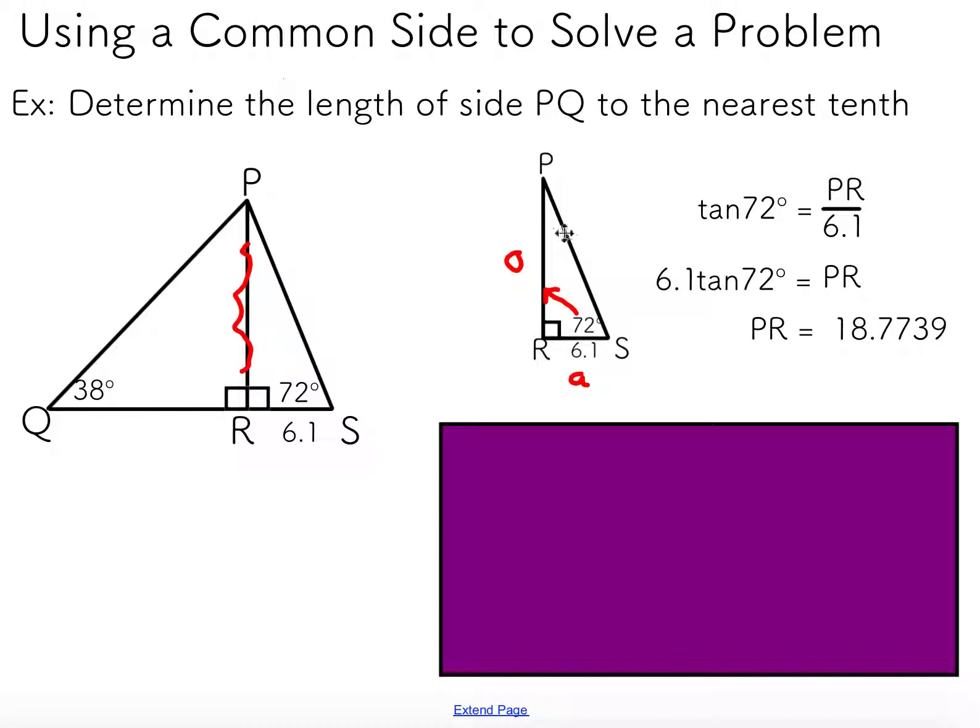I now have that shared side, and I know that that is 18.7739. I'm just going to put that on my triangle just to remind us that we do have that piece of information. That's the height of this triangle.